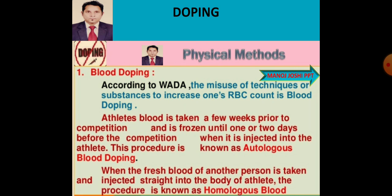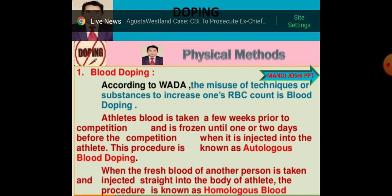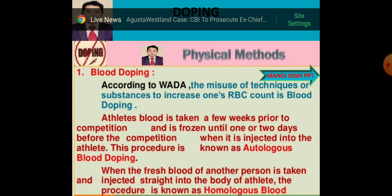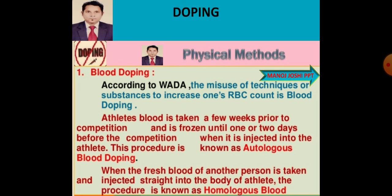In autologous blood doping, the athlete's blood cells are preserved for a period, during which the athlete is kept under supervision and given proper nutrition. These blood cells are then injected back into the athlete's body. At the time of testing, the naturally grown white blood cells are compared to the injected cells. If they are not similar, it means the athlete has taken blood from someone else.